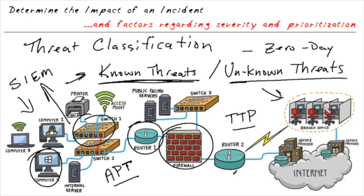If an attacker is trying to steal specific information — private health information, personally identifiable information, or credit card data — across multiple organizations at different locations, but the attacks are unique each time, that's tricky because there's no consistent element to look for. One way an organization could pull this off is to use insiders who exfiltrate data at various companies. Insiders don't have to be from the country of origin — they can be compromised individuals who are disgruntled, seeking financial gain, or being blackmailed.